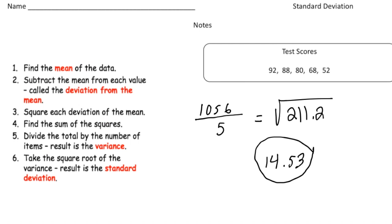So what does a standard deviation of 14.53 mean? It means that each one of these numbers, on average, is 14.53 away from the average of all the numbers. Now that you understand standard deviation, pause the video and try the "your turn" problem using your notes as a guide. When you're done, hit play and we'll see how you did. Good luck!